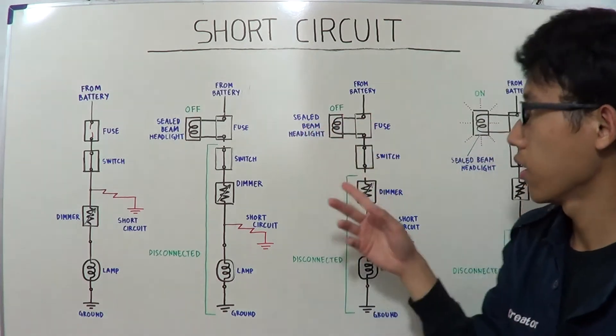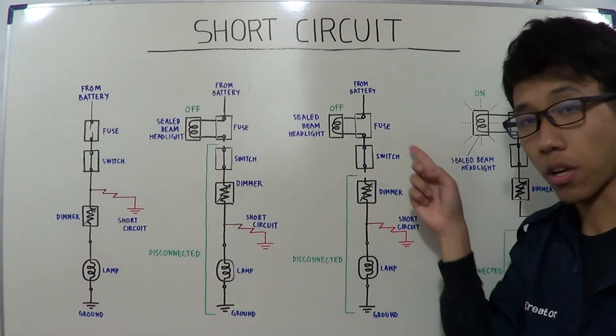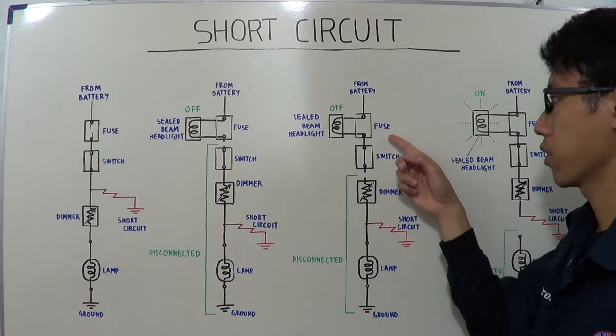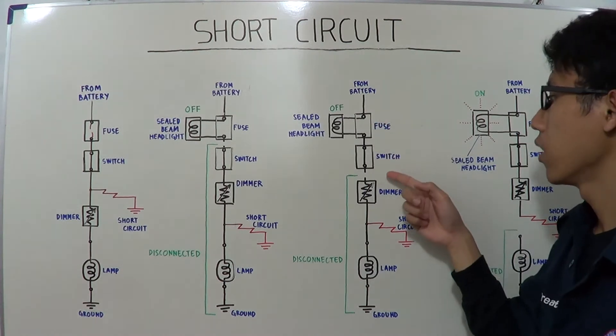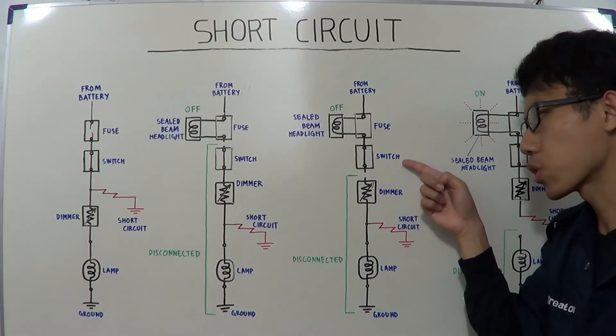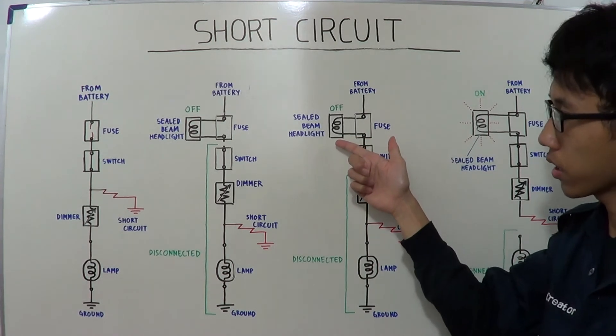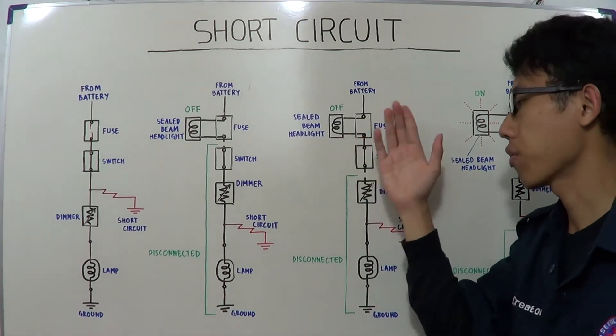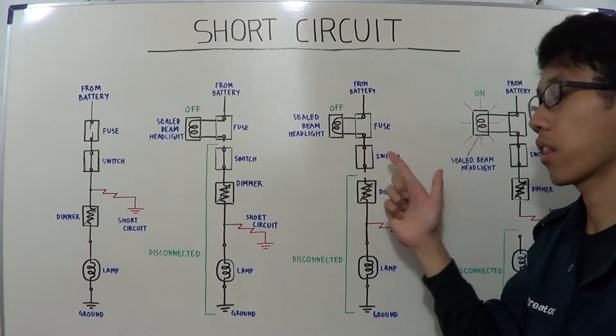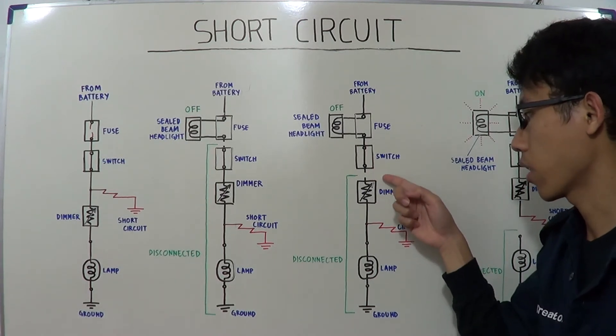Next, reconnect the first and second components, the fuse and switch. The headlight is still connected to the fuse terminal. Then disconnect the second and third components, the switch and the dimmer, and observe the sealed beam headlight. If the headlight is still off, there is no short circuit between the switch and the dimmer.